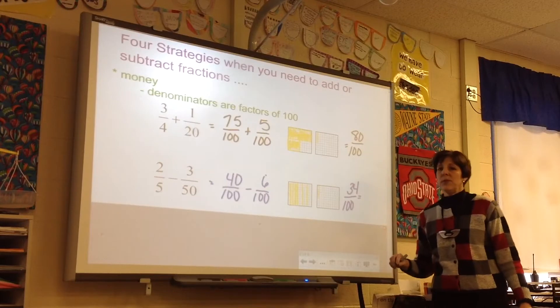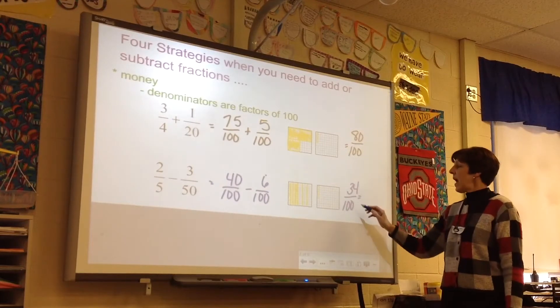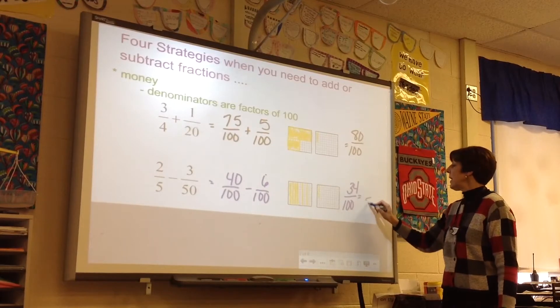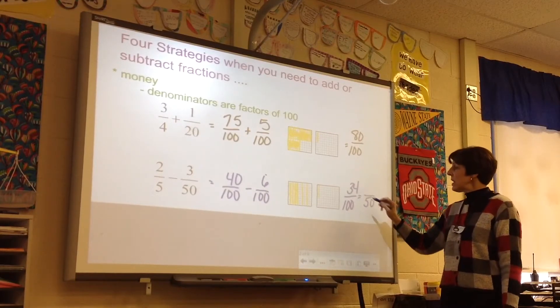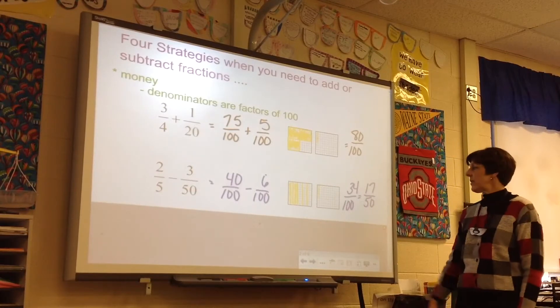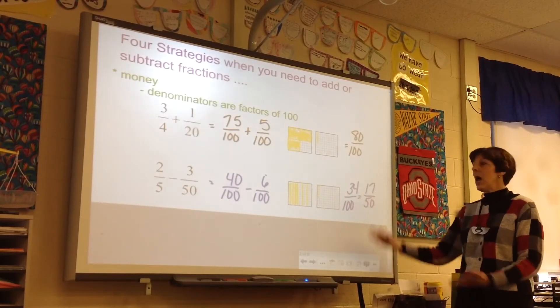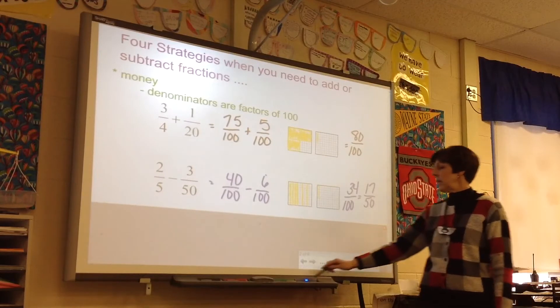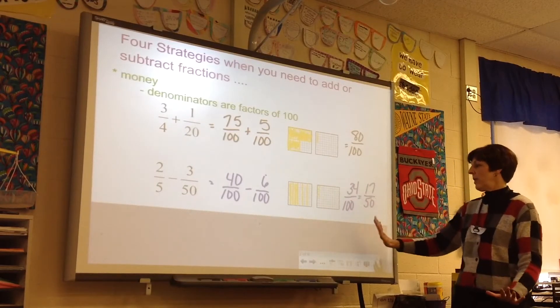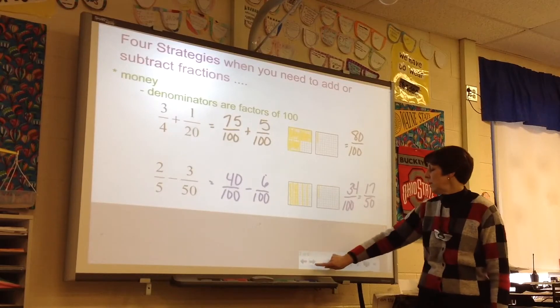One simple thing we've shown the children for simplifying, when both numbers are even, is to simply halve them. So half of 34 is 17, half of 50. A simpler version would be 17 fiftieths. Either of these solutions would be fine. So there's the money strategy.